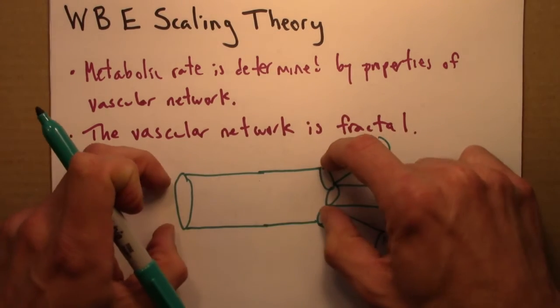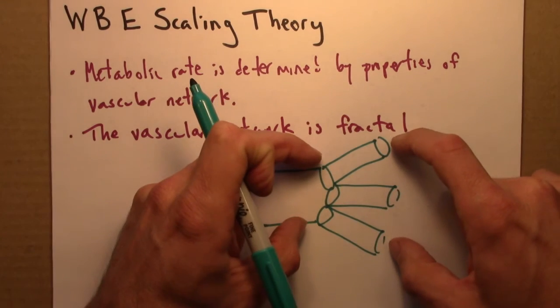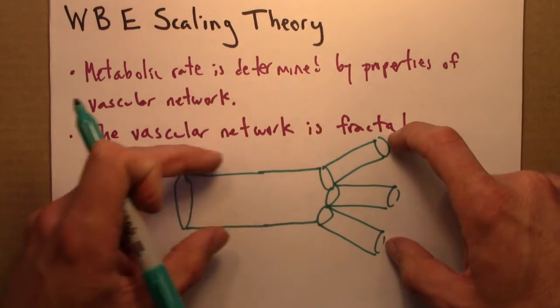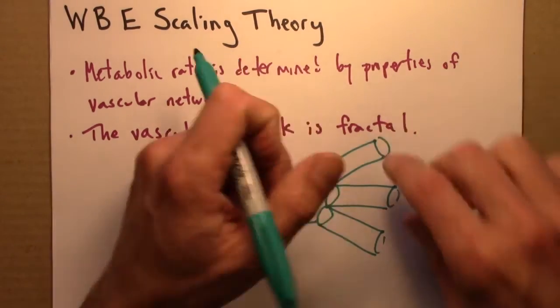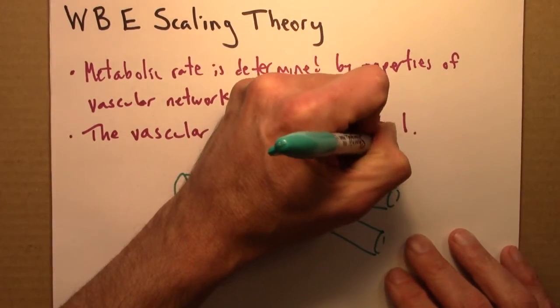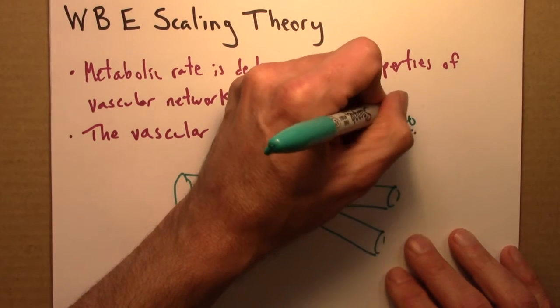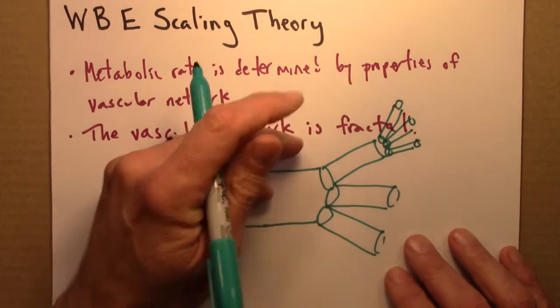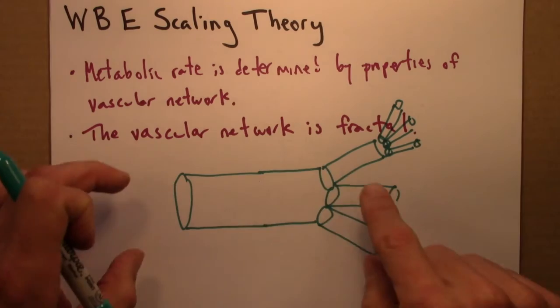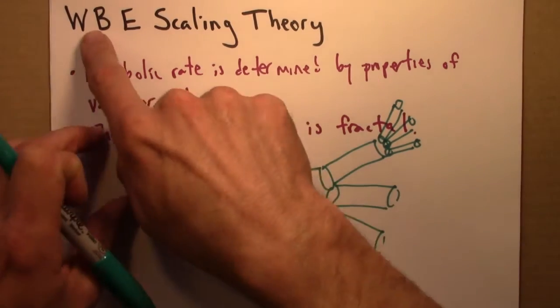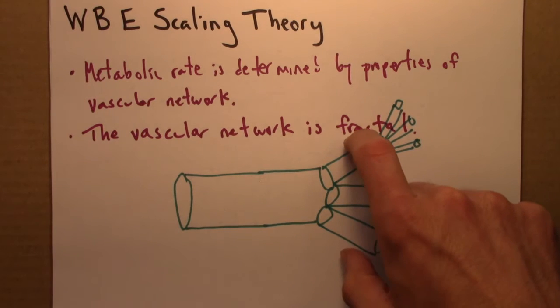So the idea here is, we have a vessel at some level in the network, and then it splits into three vessels. For example, it's just an illustration. And then these vessels themselves split into three smaller vessels, and so on. WBE assume that this network is fractal. And so that means, right, self-similar, scale-free.